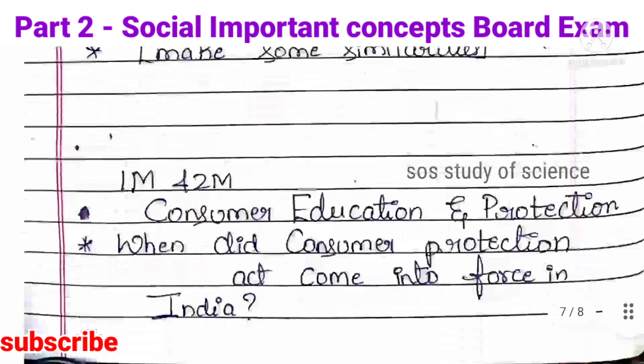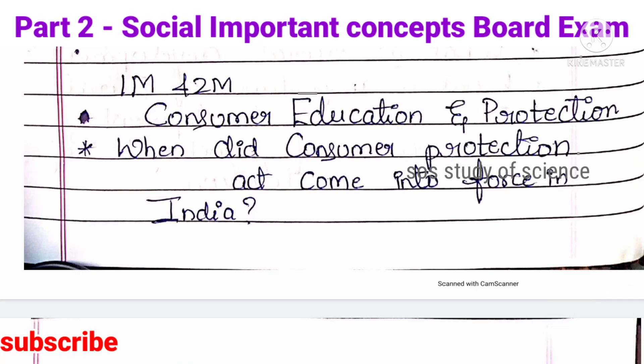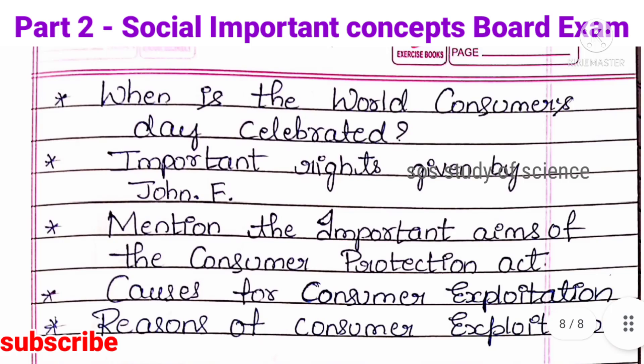Moving to the next lesson — Consumer Education and Protection. Here, 1-mark and 2-mark questions are expected. For example: When did the Consumer Protection Act come into force in India? When is World Consumer's Day celebrated? Important rights given to consumers. Mention the important aims of the Consumer Protection Act. Causes for consumer exploitation and reasons for consumer exploitation. These are very important topics from this lesson.